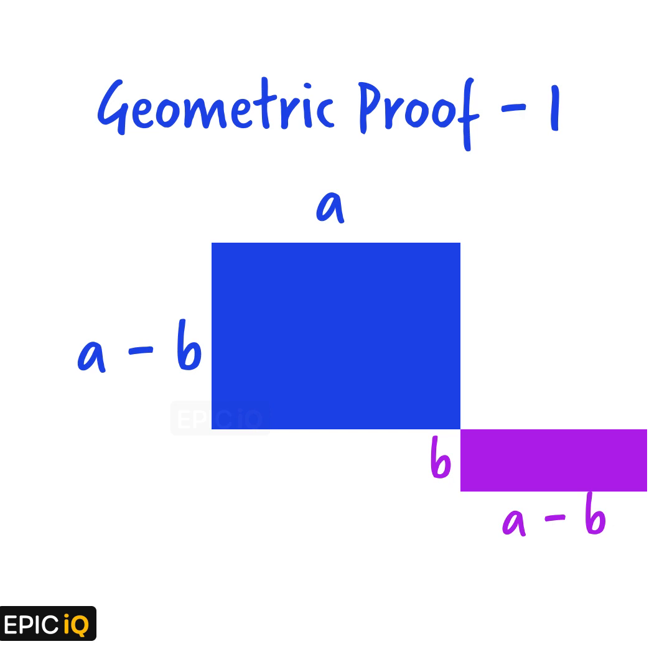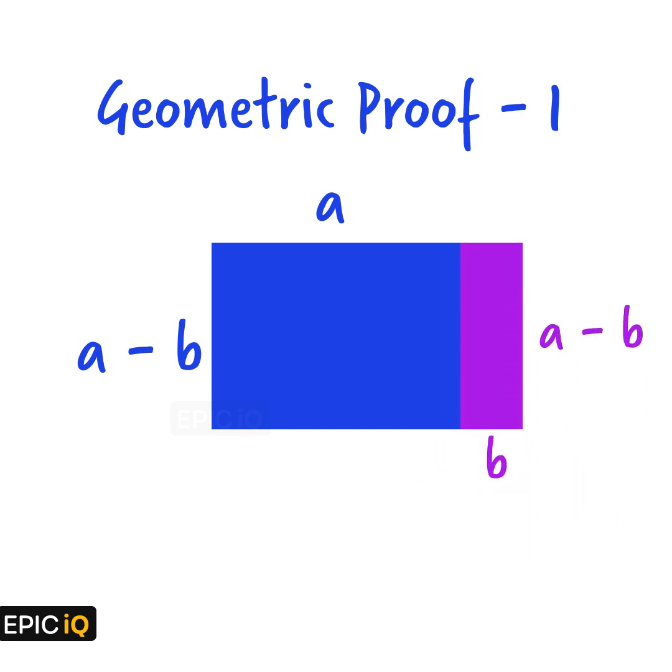We detach this smaller rectangle, rotate it, and fit it to the larger rectangle on the right side. This new arrangement forms a rectangle whose width is a plus b and whose height is a minus b.